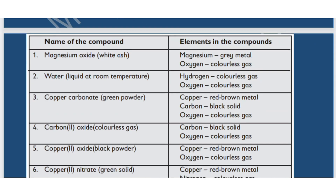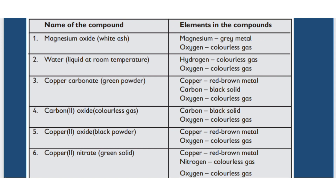Here is a table showing some compounds and their constituent elements, comparing the color of each compound and its constituent elements. Magnesium oxide is a white ash, made from magnesium — a grey metal — and oxygen, a colorless gas. Water is a liquid at room temperature, made from hydrogen and oxygen, both colorless gases. Copper carbonate is a green powder made from copper, a red-brown metal; carbon, a black solid; and oxygen, a colorless gas. Carbon dioxide is a colorless gas made from carbon, a black solid, and oxygen.